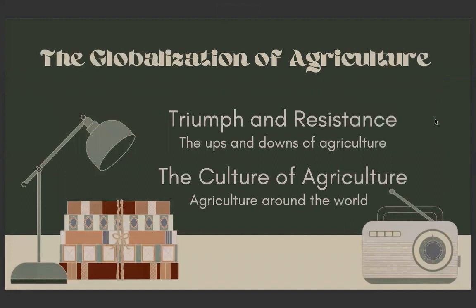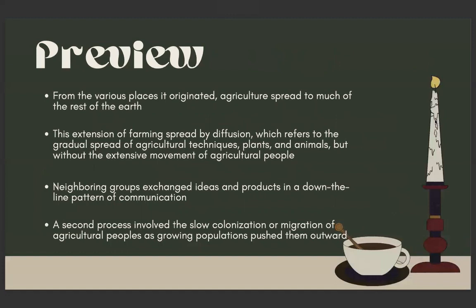Next, the globalization of agriculture. We'll be going over triumph and resistance, talking about the ups and downs of agriculture, and the culture of agriculture, where agriculture around the world spread and created new traditions and culture. From the various places it originated, agriculture spread to much of the rest of the earth. This extension of farming spread by diffusion, which refers to the gradual spread of agricultural techniques, plants, and animals, but without the extensive movement of agricultural people — neighboring groups exchanged ideas and products in a down-the-line pattern of communication. A second process involved the slow colonization or migration of agricultural peoples as growing populations pushed them outward.